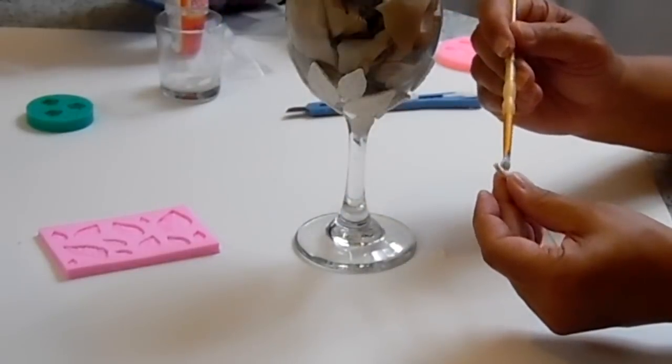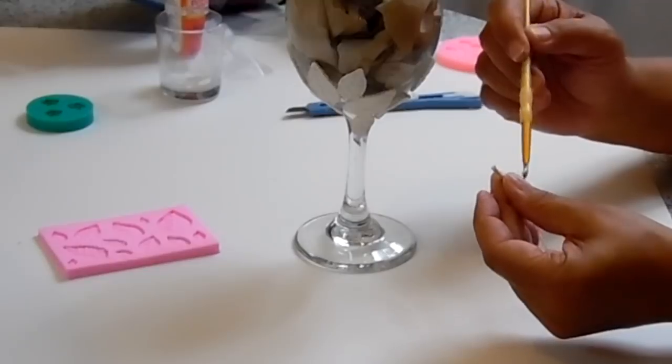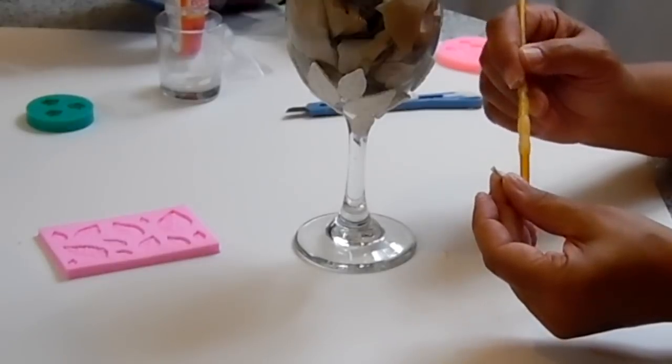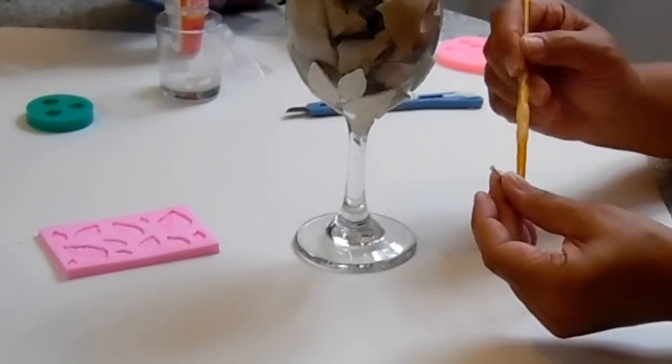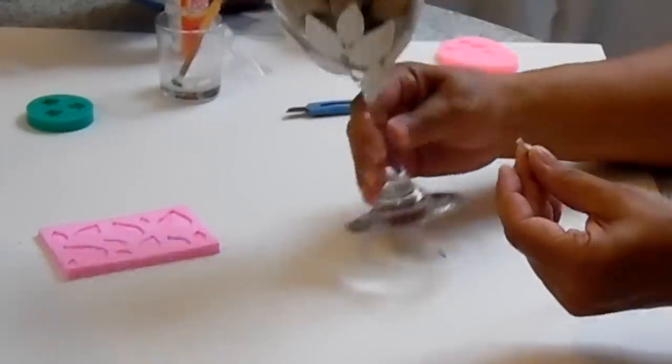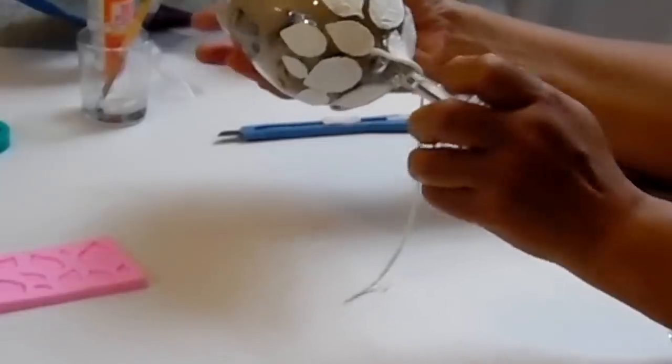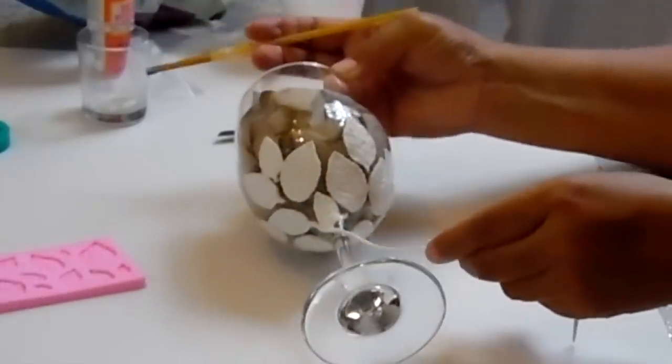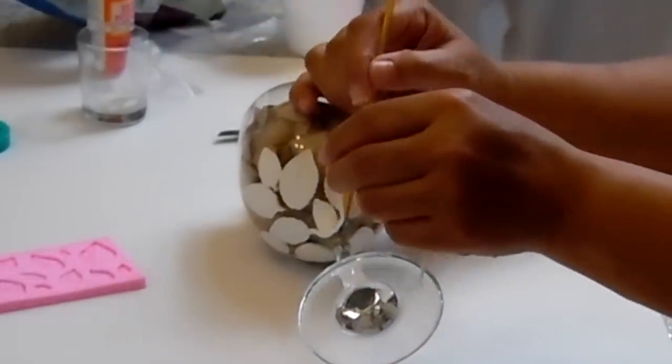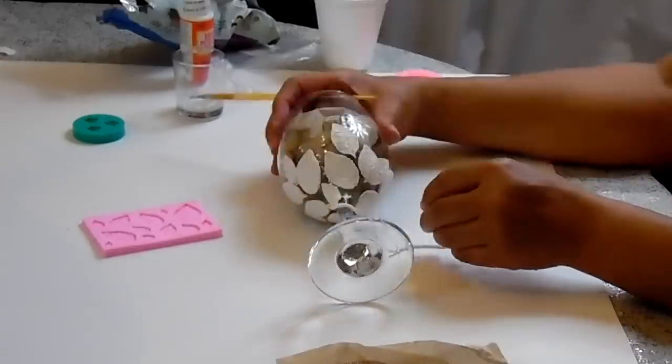Add a little Mod Podge to the tip and along the side of the stem. Now attach the stem to the bottom of the leaf and start to wrap it around the neck of the glass. Continue to add Mod Podge to the clay as you wrap it around the bottom of the glass.